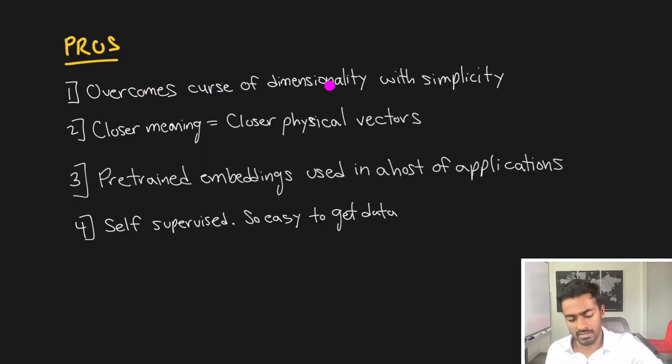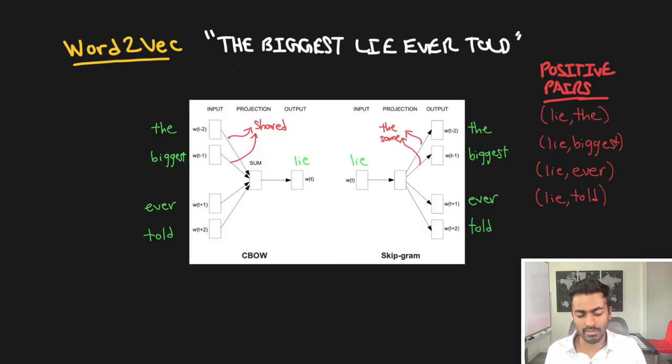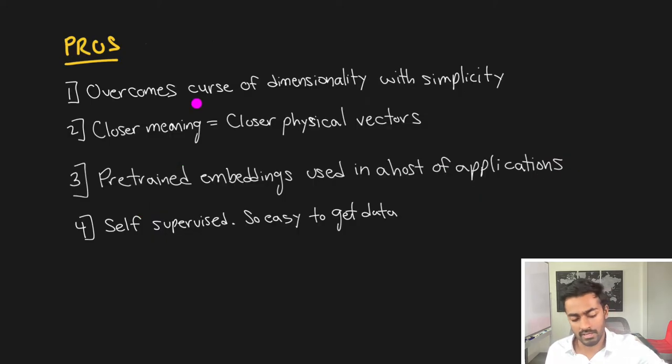The pros of this are it overcomes the curse of dimensionality with simplicity. In this architecture it's a super simple architecture, basically a feed-forward network with one hidden layer, and so it's very quick and easy to train.